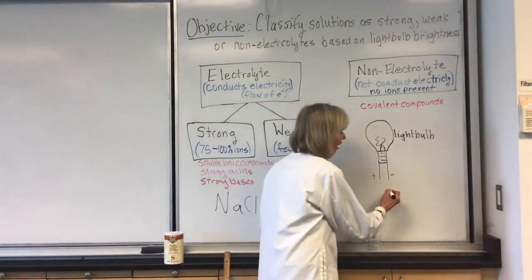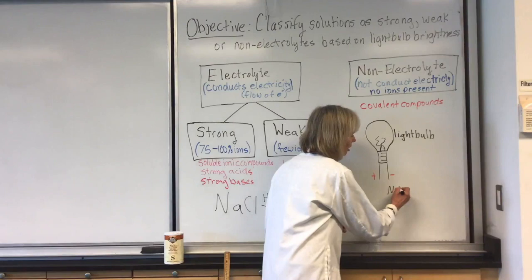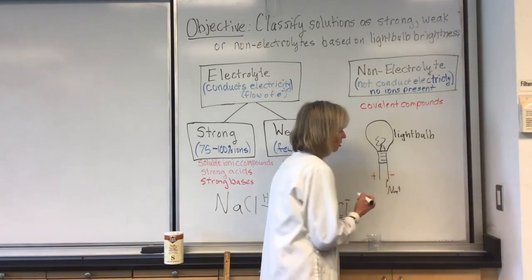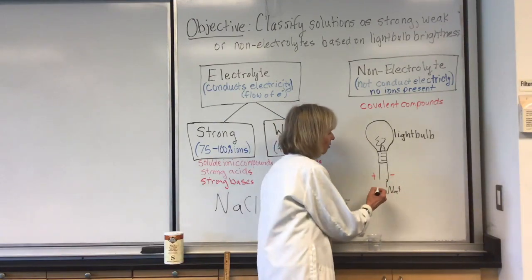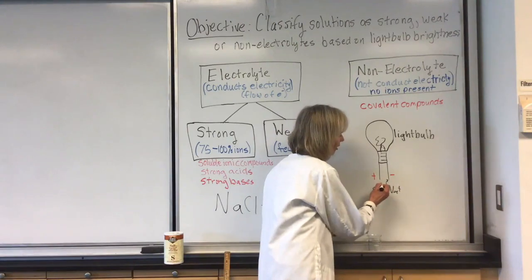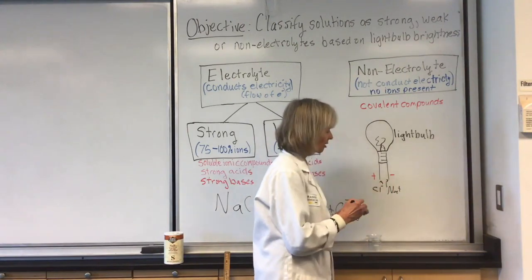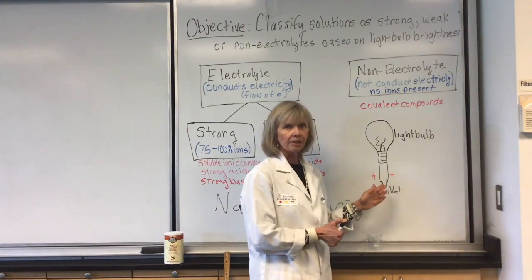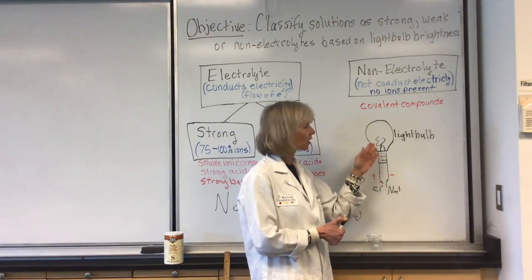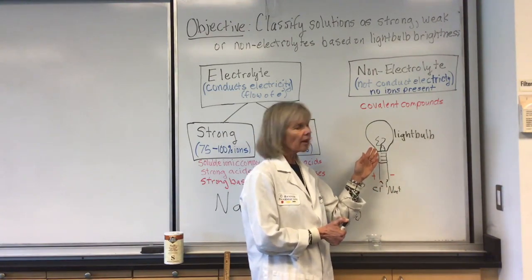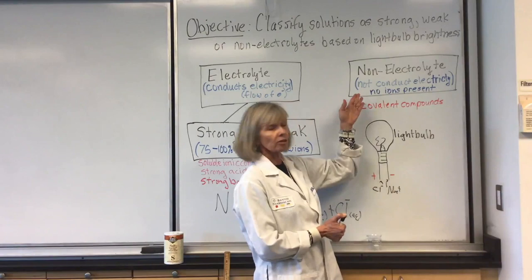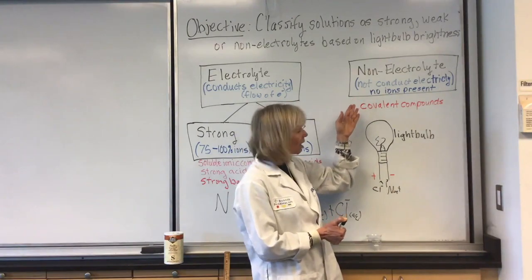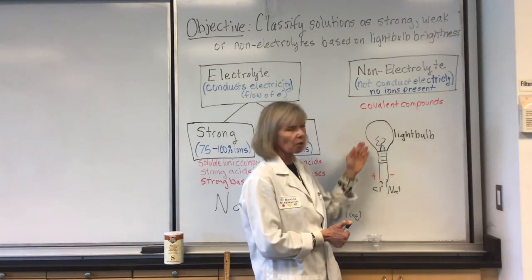What happens is we have sodium ions. They're going to be attracted to the negative side because opposites always attract. If we have chloride ions, they'll be attracted to the positive side. This flow of these ions actually completes the circuit that causes our light bulb to light up. If we have a non-electrolyte, there's no ions present. If there's no ions present, then the light bulb will not light up.